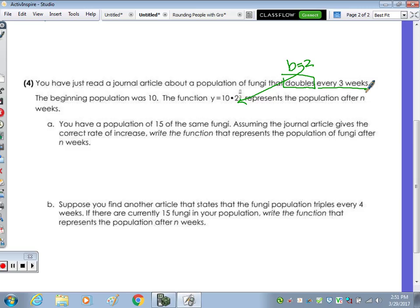Say we look at 12 weeks. That's 4 times it doubles. So you just divide, that's where this is coming into play. You divide the number of weeks by the time it's going to take for it to double every three weeks. So you divide it by three. Part A says you have a population of 15. So Y equals 15 times, because that's our starting amount. We have the same fungi. Assuming the journal article gives the correct rate of increase, write the function. So it's the same thing. Nothing changed. It was N weeks again. So times 2 to the N over 3.